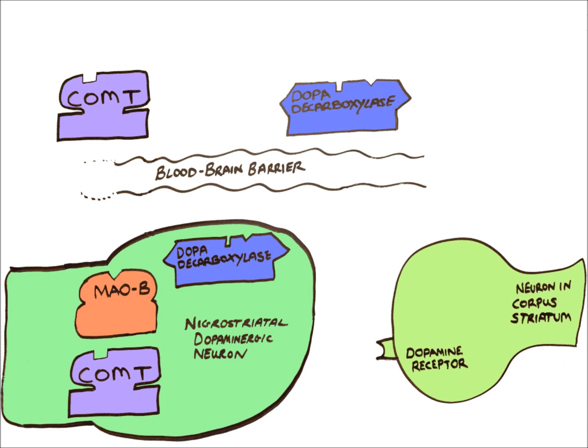In Parkinson's disease, nigrostriatal dopaminergic neurons are not able to produce enough dopamine, which stops the neurons in the corpus striatum from exerting their control on movement pathways, leading to the characteristic tremor and jerky movements associated with Parkinson's disease.